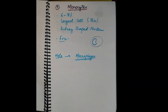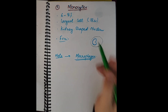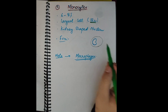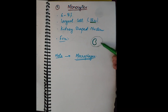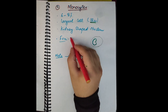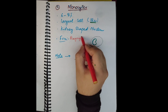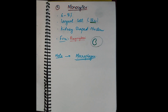Monocytes are the largest cells of the blood, with an 18-micrometer diameter. Their nucleus is kidney-shaped, blue in color, and the cytoplasm is clear with no granules. Monocytes also have the function of phagocytosis. The neutrophil arrives at the site of infection first, but if it cannot contain the infection, the monocyte arrives. Both neutrophils and monocytes have phagocytic action. Monocytes are six to eight percent of the WBC count.